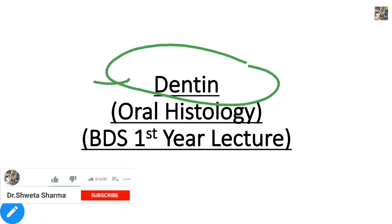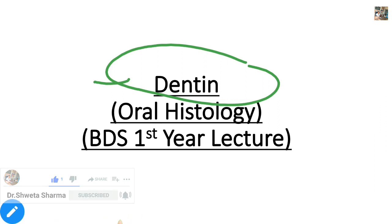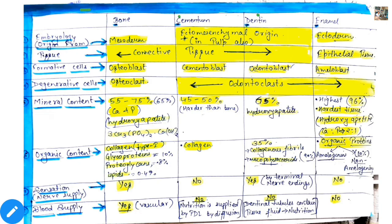So basically what you have to do first is to lay out with dentine. Before I started the enamel chapter, I also showed you a table there which is bone, cementum, dentine and enamel — A, B, C, D, E. You can remember them in a serial manner.